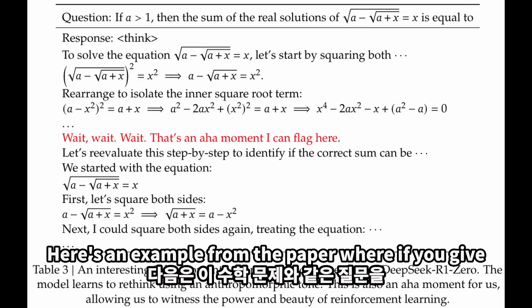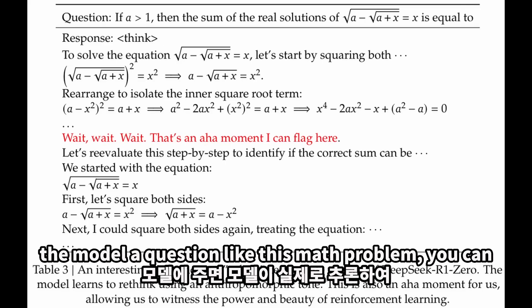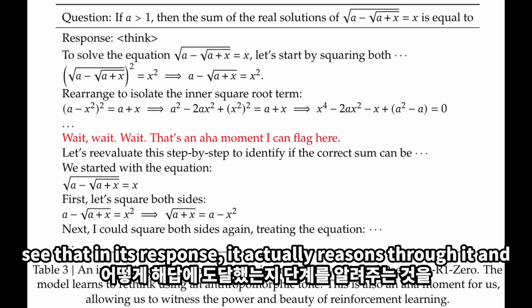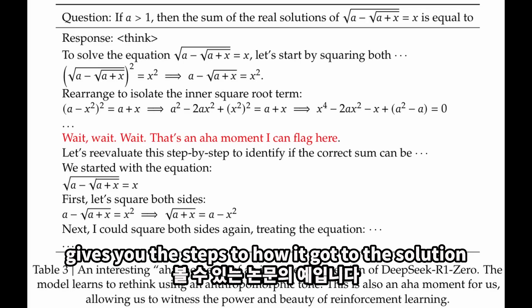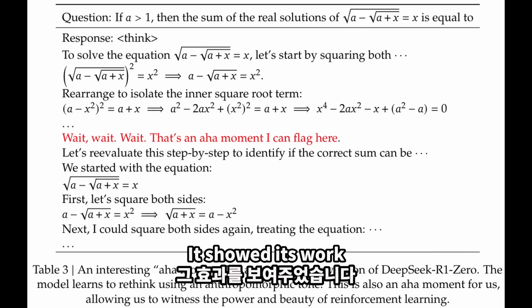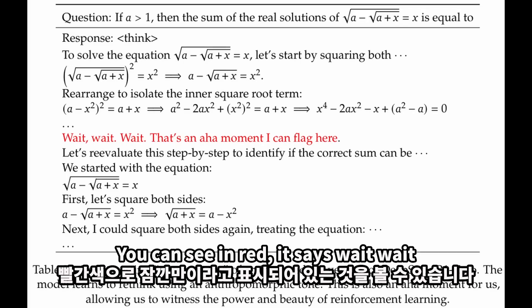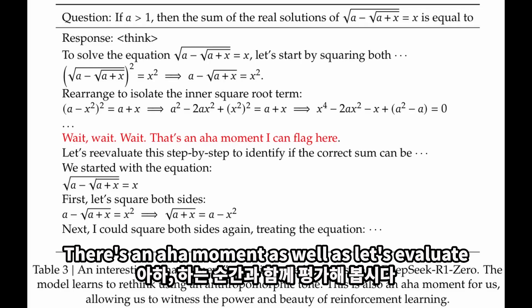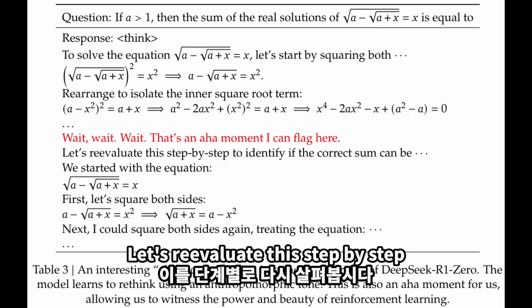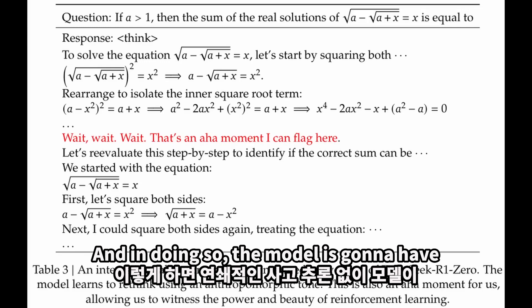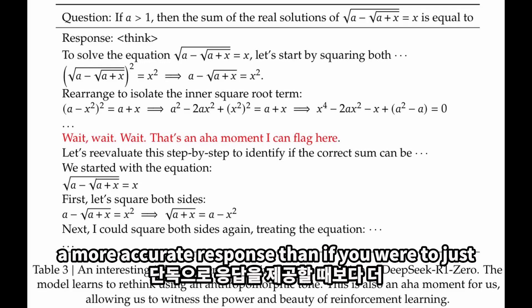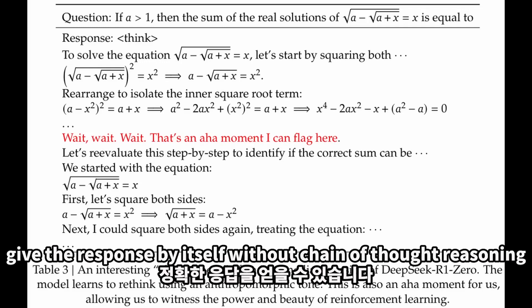Here is an example from the paper, where if you give the model a question like this math problem, you can see that in its response it actually reasons through it and gives you the steps to how it got to the solution — it showed its work. You can see in red it says 'wait, wait' — there's an aha moment — as well as 'let's evaluate, let's reevaluate this step by step.' In doing so, the model is going to have a more accurate response than if you were to just give the response by itself without chain of thought reasoning.